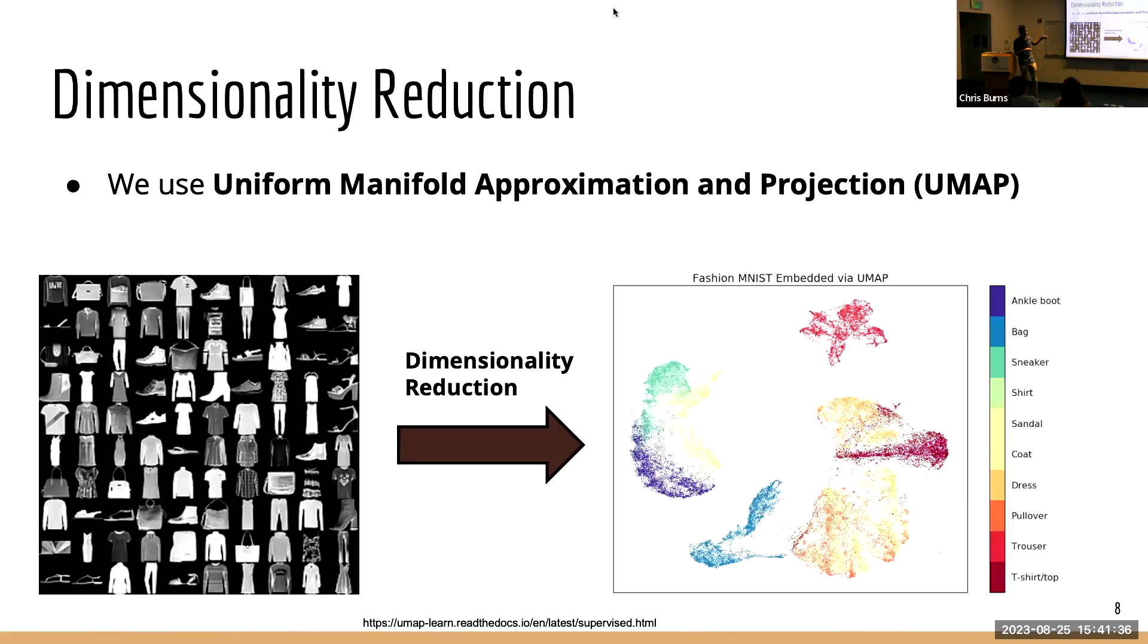The technique we're using is the Uniform Manifold Approximation and Projection technique. This is a relatively new and popular technique used in looking at many different types of multi-dimensional data sets in different fields outside of astronomy. It's only now kind of becoming more and more used in astronomy. So the way it works is, similar to the MNIST data set that I showed earlier with the digits, we can take a data set. In this case, it's the fashion MNIST data set with different articles of clothing.